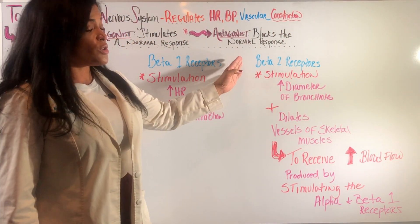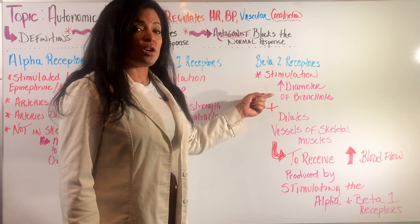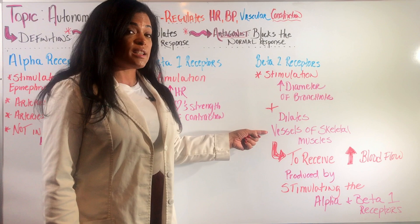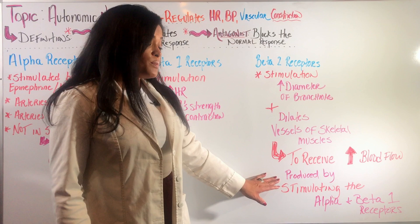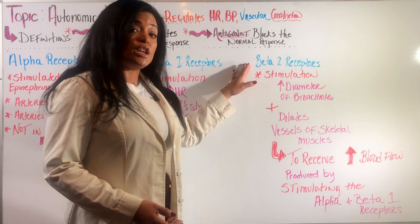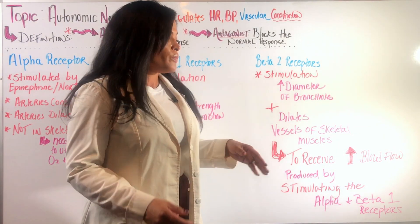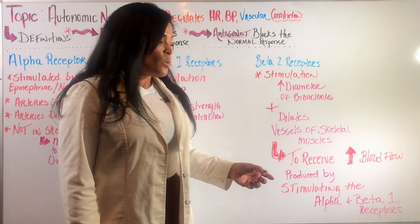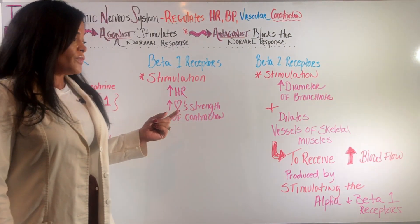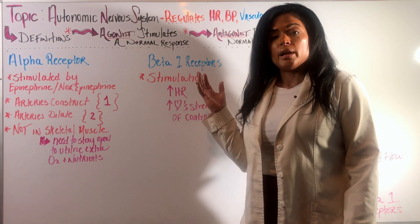When the beta-2 receptors are stimulated — located in your lungs, two for two lungs — the diameter of the bronchioles increases, dilating them so the person can breathe easier. It also dilates the vessels of the skeletal muscle so they receive the increased blood flow produced by the stimulation of your alpha and beta-1 receptors. This increased blood flow is rich in oxygen and nutrients due to the increase in strength of contraction from beta-1 stimulation and the effects of epinephrine and norepinephrine on the alpha receptors.